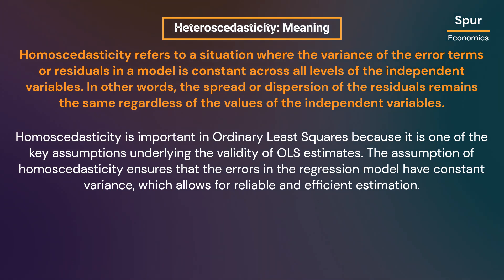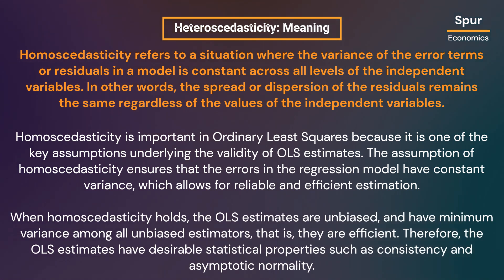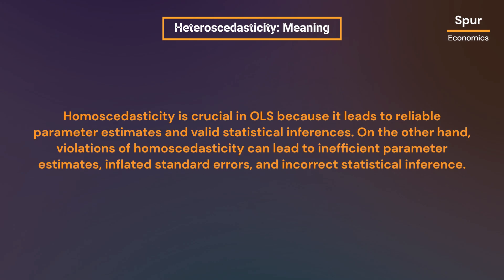The assumption of homoscedasticity ensures that the errors in the regression model have constant variance, which allows for reliable and efficient estimation of the model parameters. When homoscedasticity holds, the OLS estimates are unbiased and have minimum variance among all unbiased estimators — that is, they are efficient — and have desirable statistical properties such as consistency and asymptotic normality. Violations of homoscedasticity can lead to inefficient parameter estimates, inflated standard errors, and incorrect statistical inference.